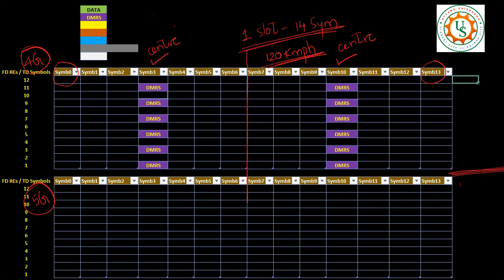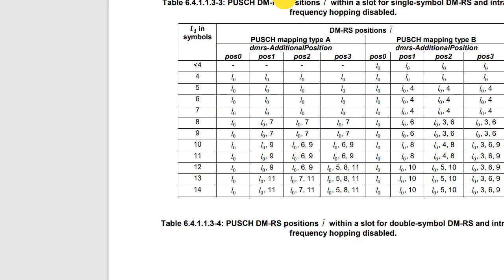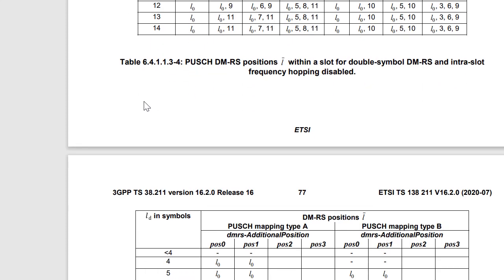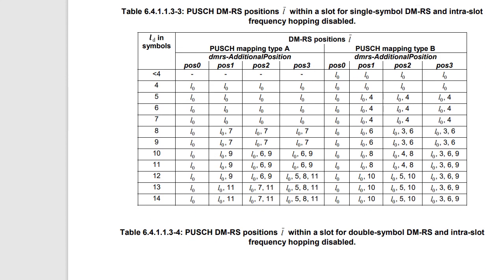There are two types: one is mapping type A and another one is mapping type B. So we will look at mapping type A from the specification — this is from 3GPP 38.211 version 16.2. In this table, this is a single-symbol DMRS with intra-slot frequency hopping disabled. For mapping type A the number of PUSCH symbols less than four is not applicable, but for mapping type B it is there.